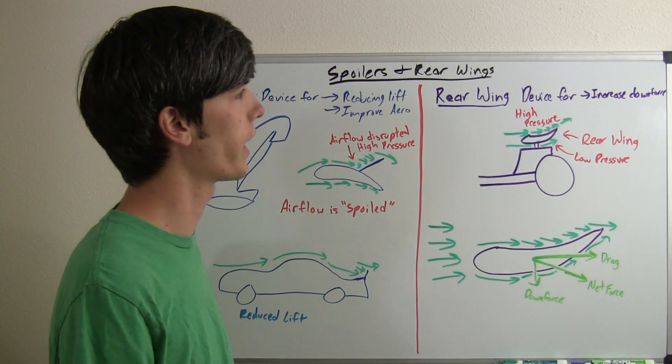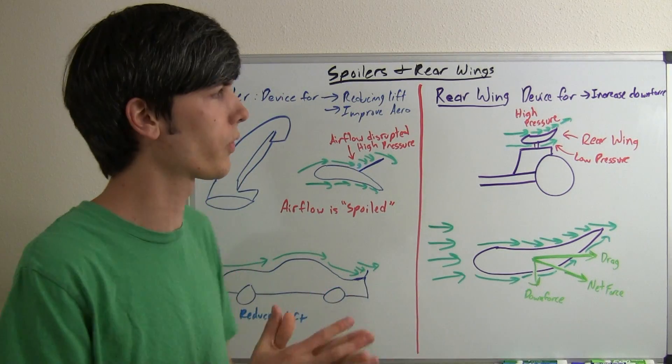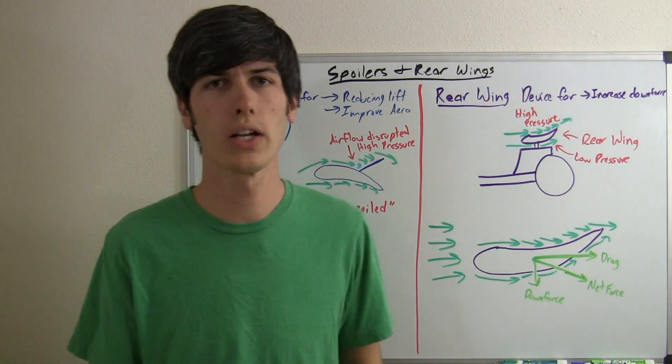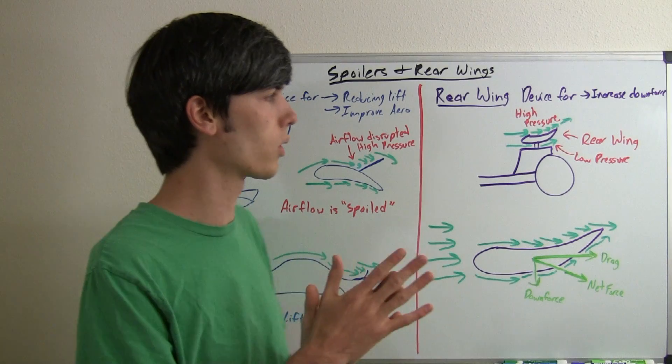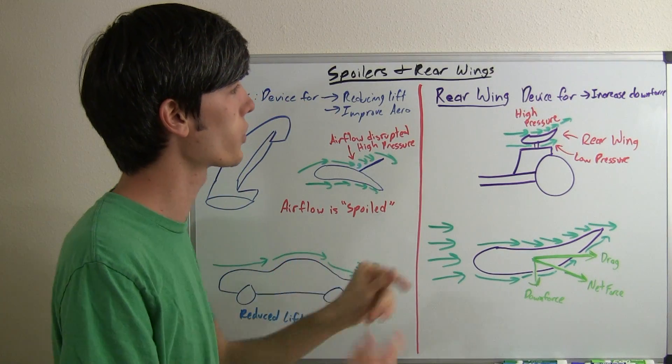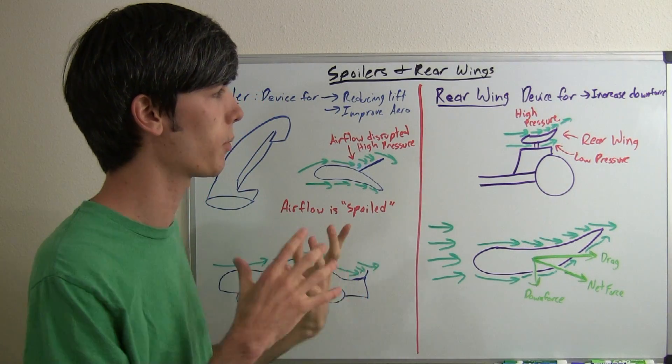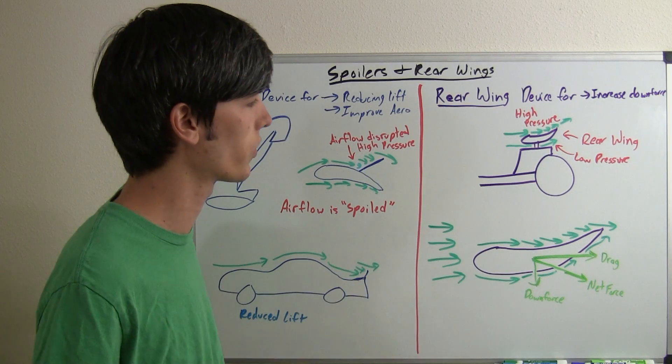Now a rear wing on the other hand is a device intentionally used for creating downforce. So you're intentionally creating a larger force pressing down on the vehicle so they can go around a corner faster. Now I'll have a video eventually talking about downforce and how much faster it will allow cars to go around corners.